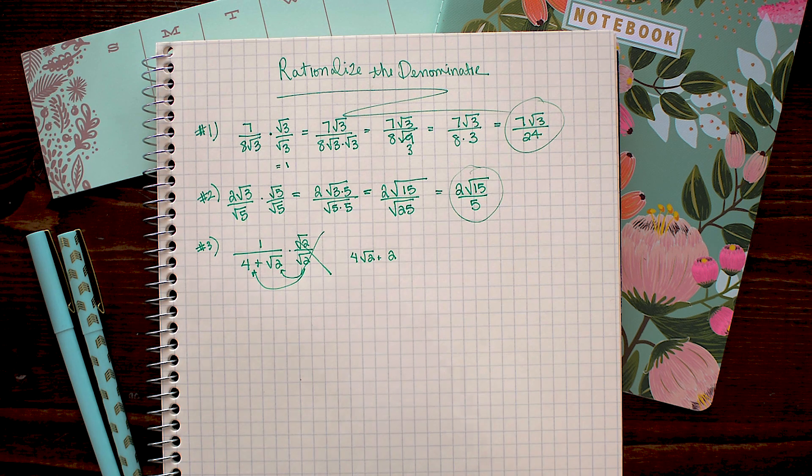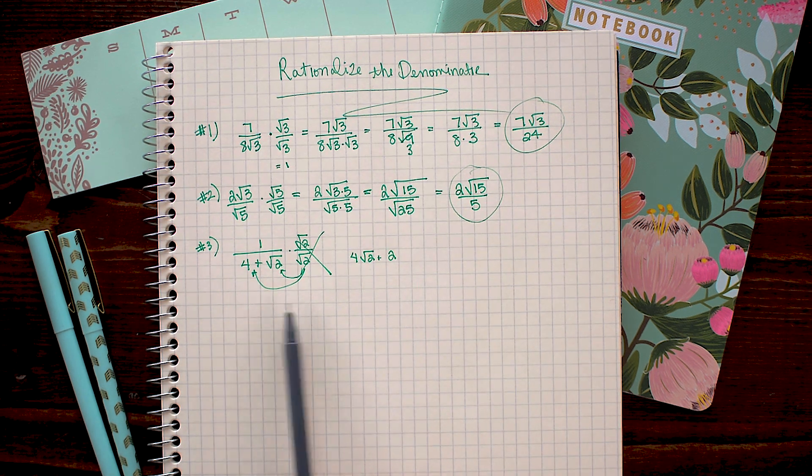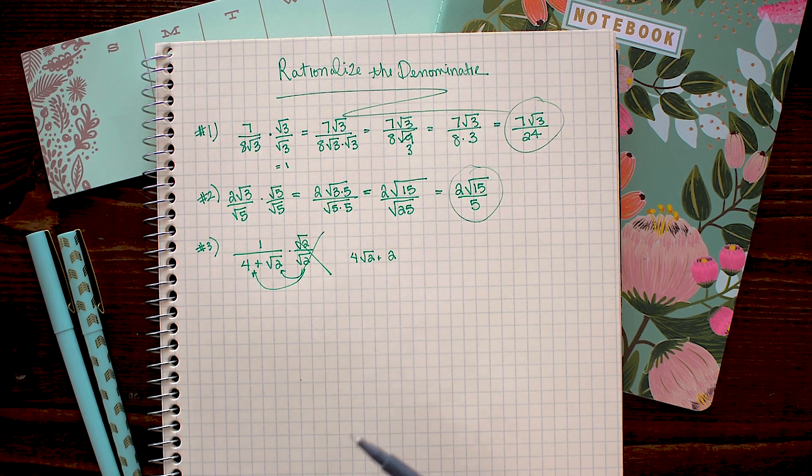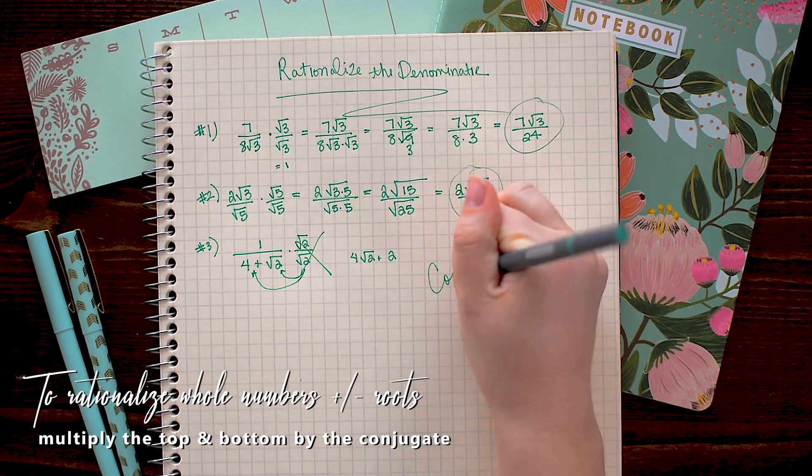So how do we get around this issue where we want to get rid of a square root, but not introduce a new square root into the denominator? To do that, you need to multiply by something called the conjugate.